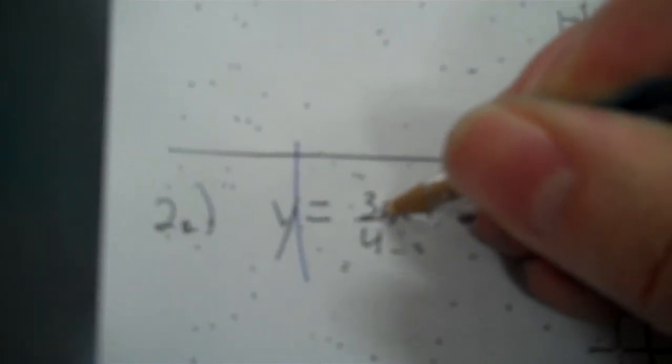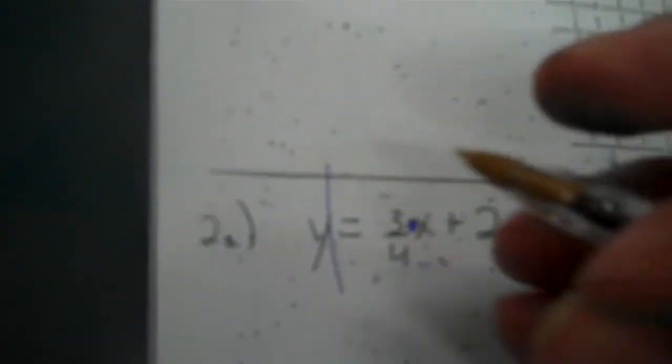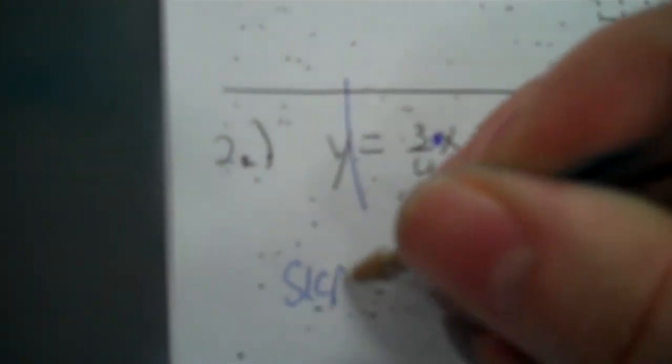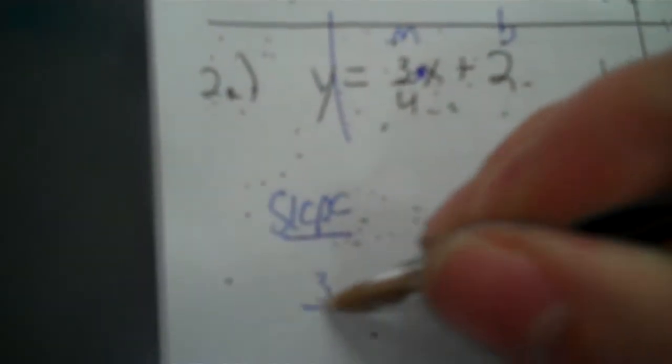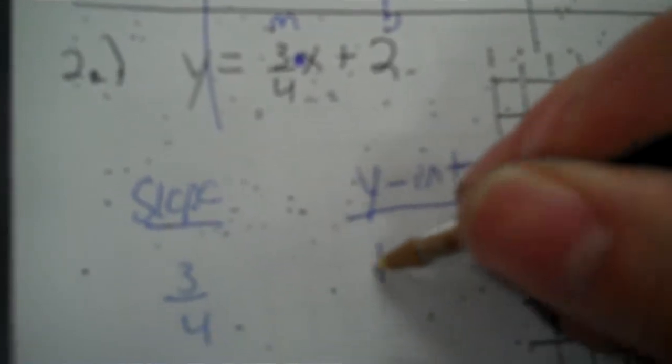Y equals 3 fourths x plus 2. So you got a times and a plus 2. So you will be slope y-int. So slope, this is m, this is b. The slope is the m. So 3 over 4. And then the y-intercept is positive 2.